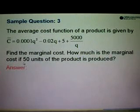So let's look at sample question number 3. The average cost function of a product is given by c bar. So c bar denotes the average cost which is 0.0001q square minus 0.02q plus 5 plus 5000 over q.